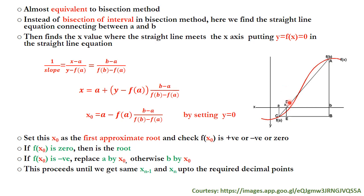We find where the straight line meets the x-axis, and this x value is taken as the first approximate root. To find the straight line equation, we take the reciprocal of the slope of the straight line.